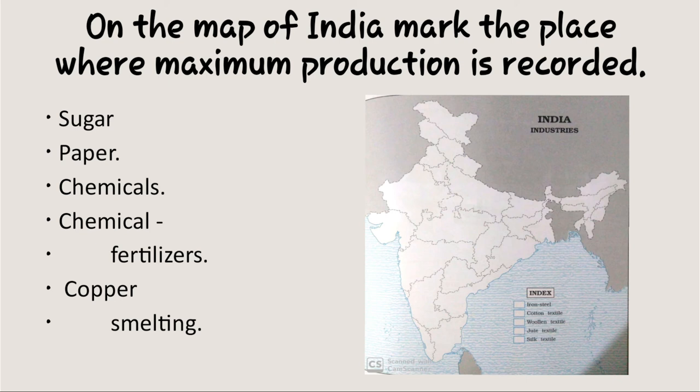For chemical fertilizers, the first chemical fertilizer plant was established at Ranipat in Tamil Nadu — so mark Ranipat. Chemical fertilizers are concentrated in Gujarat, Tamil Nadu, UP, Punjab and Kerala. For copper refinery or copper smelting, the first refining unit was made at Ghatsila in Jharkhand — so we mark Ghatsila or Jharkhand.